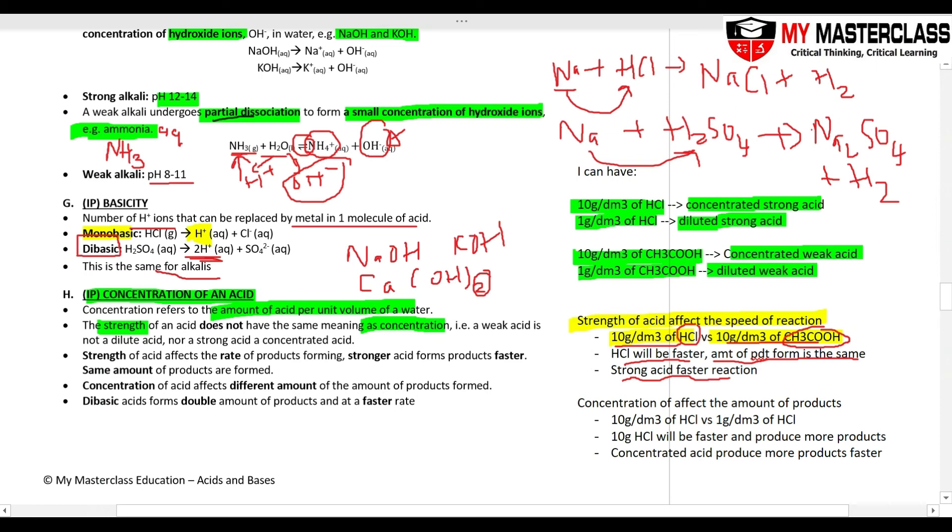Concentration affects the amount of product formed. So for example, I have 10 grams of HCl, 1 gram of HCl. So now both are strong acids, same acid and the concentration is different. One is 10 and one is 1. So which one will be faster? 10 grams will give faster reaction and it will also give me more products. So example, this one will give me 10 cm³, 1 minute. This one will give me 1 cm³, maybe 2 minutes.